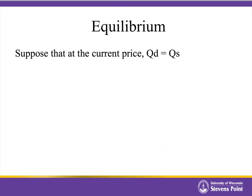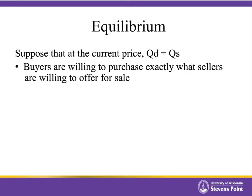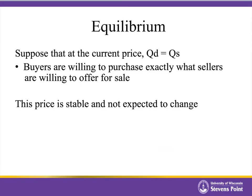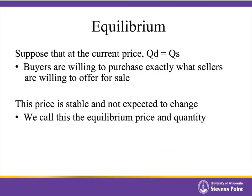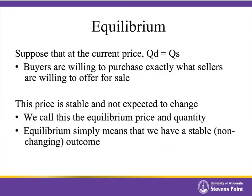When we talk about equilibrium, it is described as a situation where at the current price, quantity demanded is equal to quantity supplied. Buyers are willing to purchase exactly what the sellers are willing to offer for sale, so everybody gets to go home happy. The reason we call this equilibrium is because the price here is stable and is not expected to change. The term equilibrium simply means we have a stable or non-changing outcome.